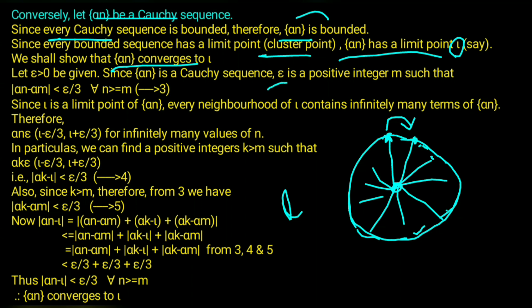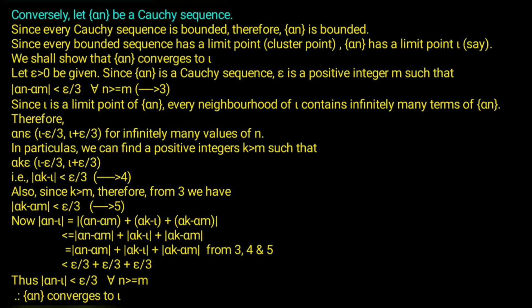Since an is a Cauchy sequence, there exists a positive integer m such that modulus an minus am is less than epsilon by 3. This is important: we use epsilon by 3 here, which is a specific choice. For all n greater than or equal to m, this is equation 3.